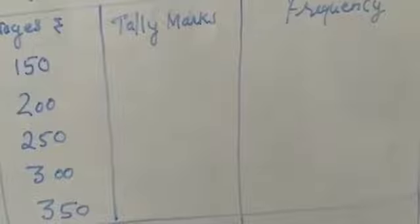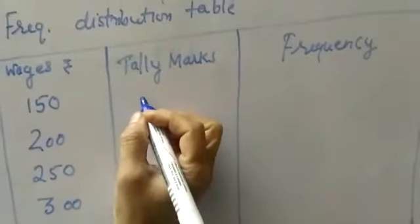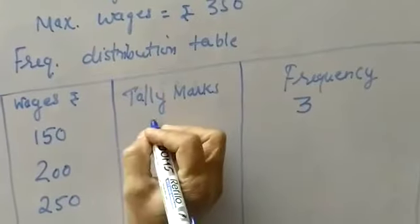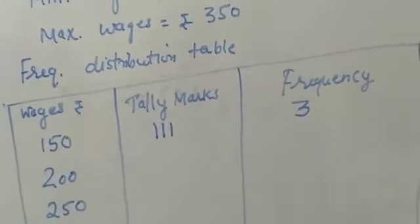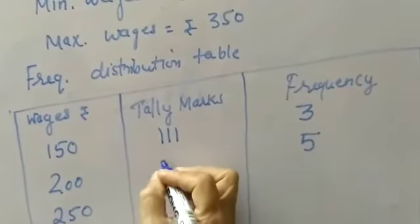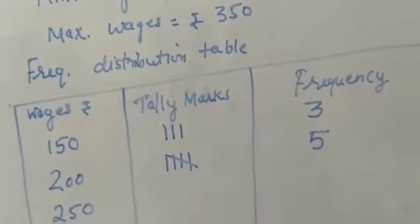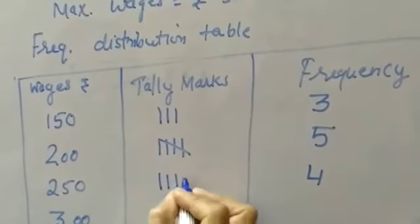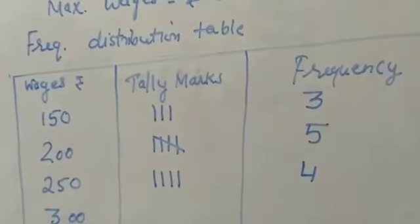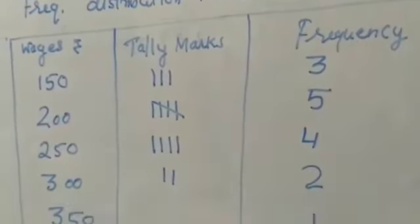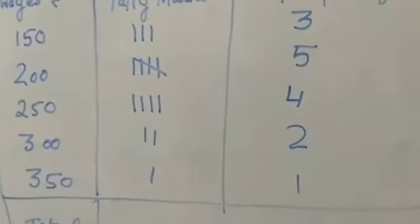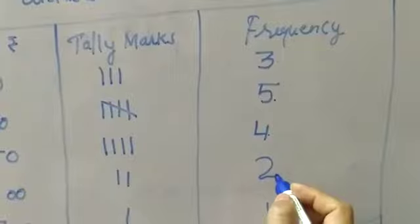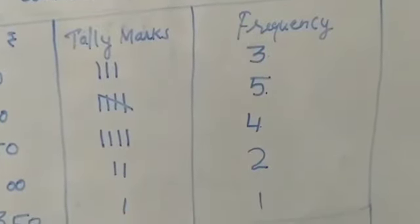Here we have the wages: 150, 200, 250, 300, 350. Count the frequencies: 150 appears 3 times, 200 appears 5 times, 250 appears 4 times, 300 appears 2 times, 350 appears 1 time. Total: 3 plus 5 is 8, plus 4 is 12, plus 2 is 14, plus 1 is 15.